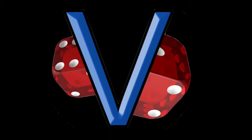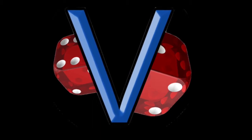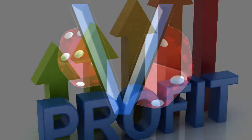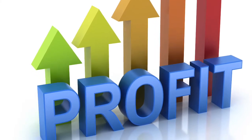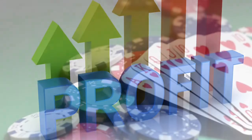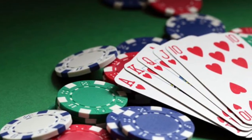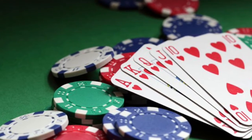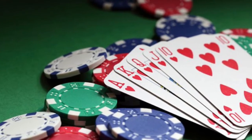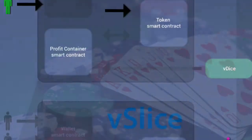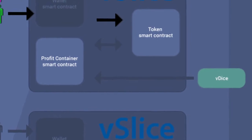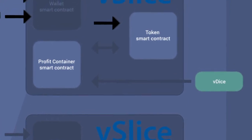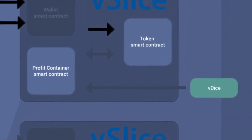vDice is a smart contract running on the Ethereum blockchain and is a betting game which can produce profits. vDice is a gambling game with cryptocurrency. vSlice, also known as VSL, is a meta token on Ethereum and operates with three smart contracts, which each handle a different job for token issuance.